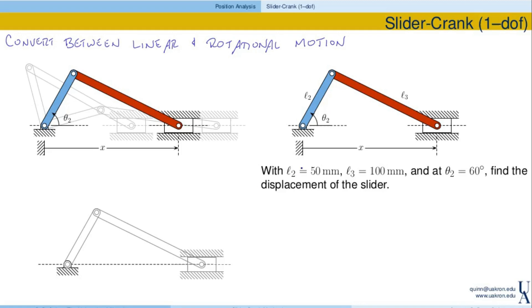So here's the question. I'm going to give you L2 and L3, and I'm going to tell you that theta 2 is 60 degrees. So we're really thinking about this blue link as the input link. And then I'd like to find the displacement of the slider — what's the value of x that corresponds to this configuration? The light blue link is the input, and the slider represents the output motion.